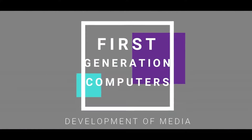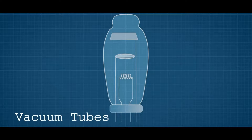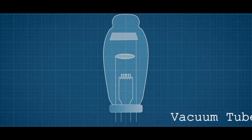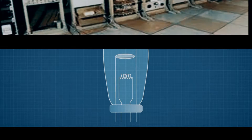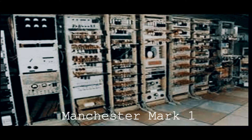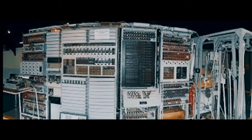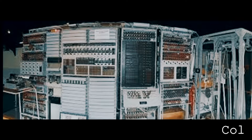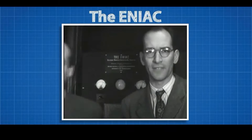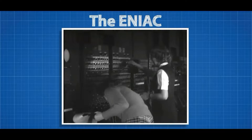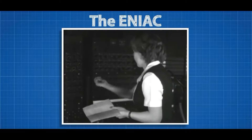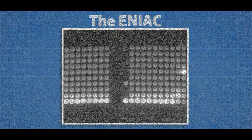After all this, the generation of computers was born. In the first generation of computers, between 1946 to 1959, the vacuum tube was used as a basic component. The Manchester Mark 1 is considered the first commercially available general-purpose computer. This was followed by the Colossus digital computer, which had 1,700 valves, and the ENIAC — Electronic Numerical Integrator and Computer — the world's first general-purpose computer.